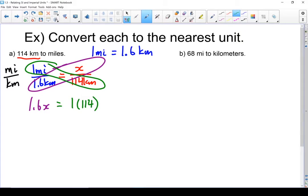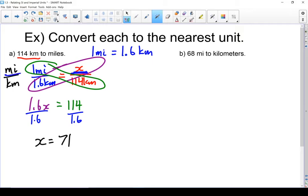Anything times 1 doesn't change so I can get lazy. I can just write down 114. Let's finish this off by dividing both sides by 1.6 because I want that x all by itself. I'm left with x equals 71. Going back up to our question I see that x is on the top and any number from the top is a mile. So this must be 71 miles.